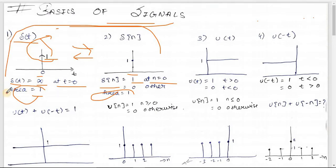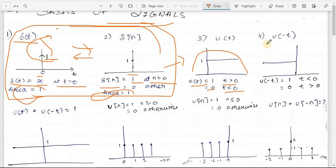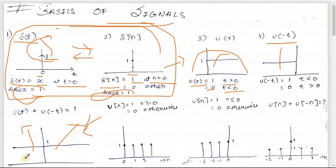Now let's look at the unit step function. u(t) equals 1 for t>0 and 0 for t<0. For u(-t), it equals 1 for t<0 and 0 for t>0. If you add u(t) + u(-t), you get a signal with magnitude 1 from minus infinity to infinity. At t=0, using Gibbs phenomenon — taking the average of the left and right limits — the value is (0+1)/2 = 1/2.